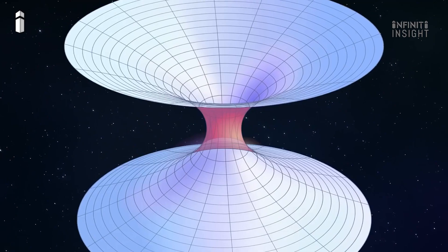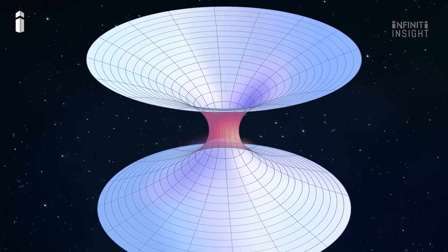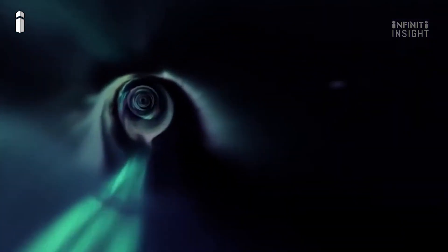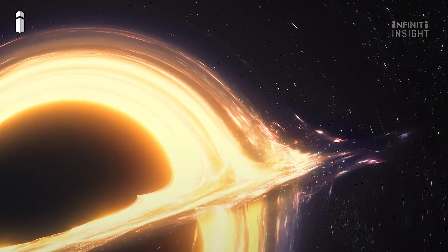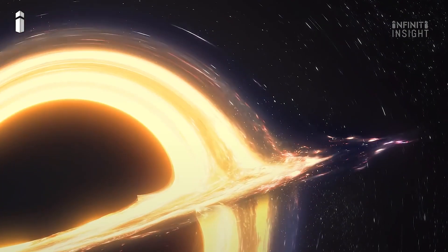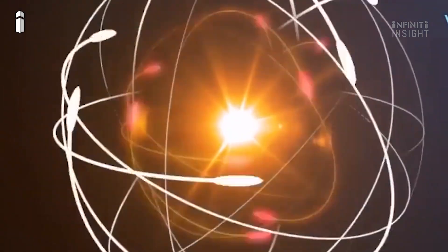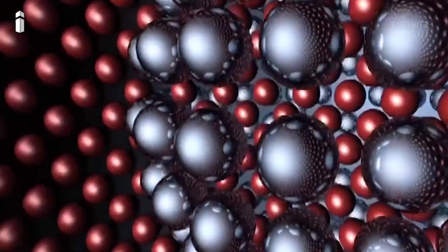According to general relativity, wormholes could have black holes at each end, meaning that after diving into a black hole on one end. The energy that was once your body could get spewed out somewhere totally different in the universe. Of course, you would not survive that trip. All that would be left is radiation and subatomic particles.